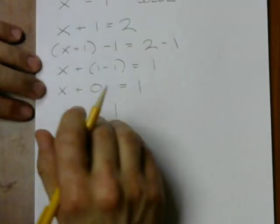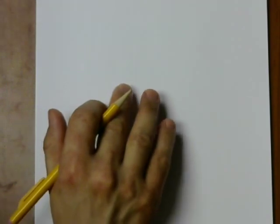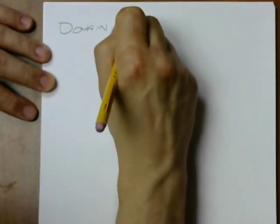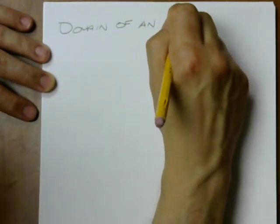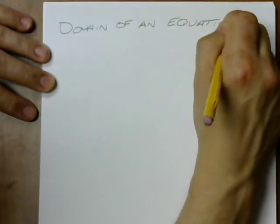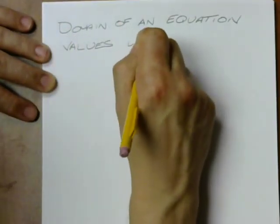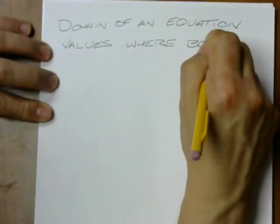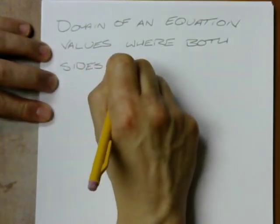So this is something you're a little more familiar with. What you might not be familiar with is the idea of the domain of an equation. So the domain of an equation, these are going to be the values where both sides are defined.